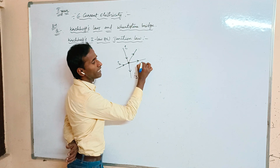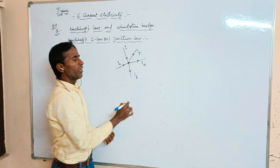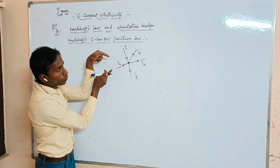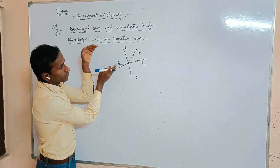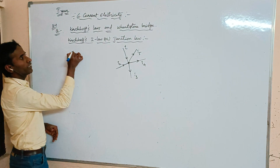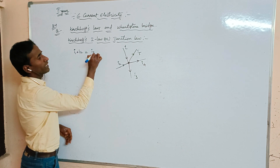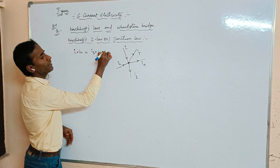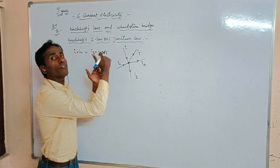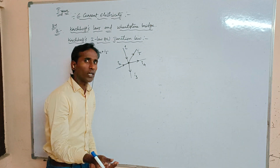The remaining currents i3, i4, and i5 are passing away from the junction. Currents i1 and i2 move towards the junction, so: i1 + i2 = i3 + i4 + i5. The sum of currents towards the junction equals the sum of currents away from the junction. This is Kirchhoff's First Law.